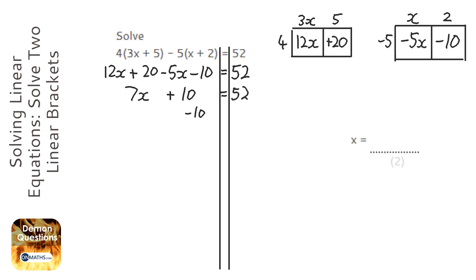equation. I can take away the 10 both sides, so it's going to be 7x equals 42, and then divide 7 both sides.